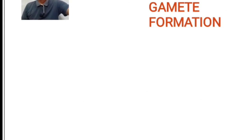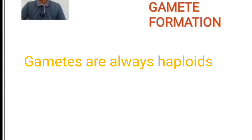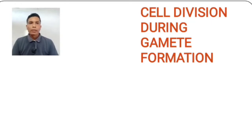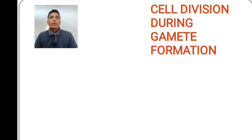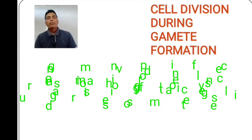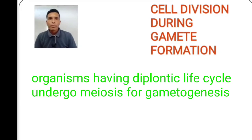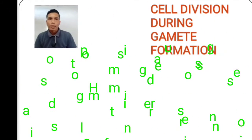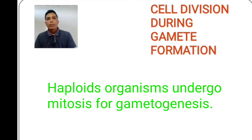Next, we have cell divisions during gamete formation. Gametes are always haploid, whether the parent organism is haploid or diploid. The type of cell division that occurs in gametogenesis depends on the ploidy of the parent organism. If the parent organism is diploid, there will be meiosis for gametogenesis. If the parent organism is haploid, then there will be mitosis.